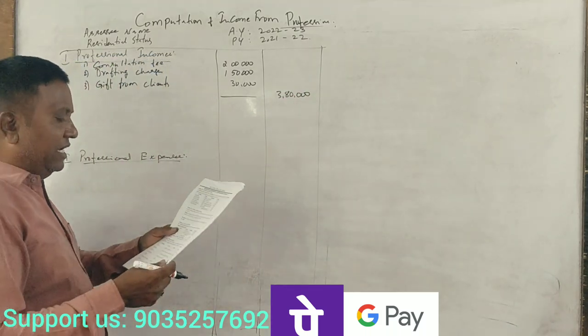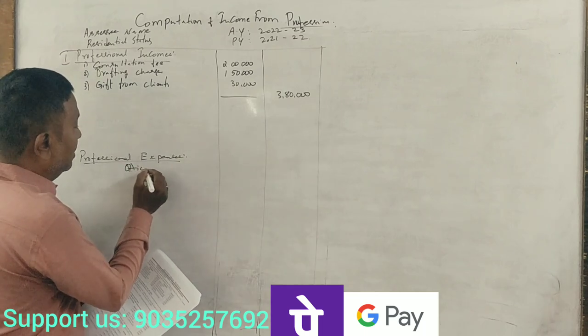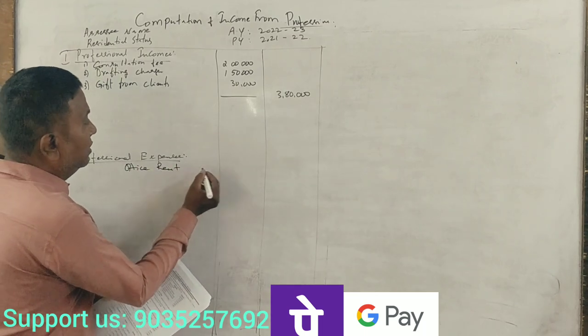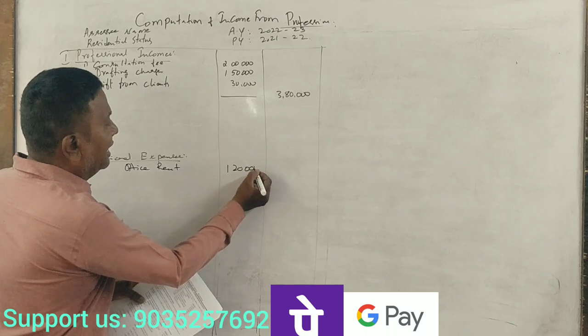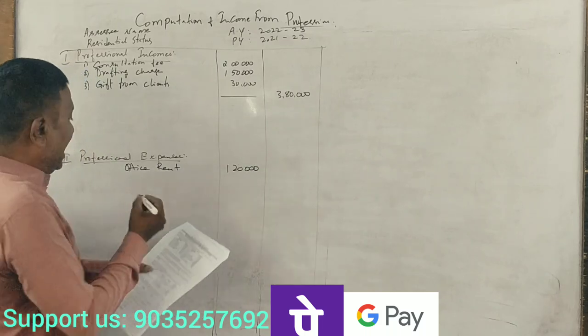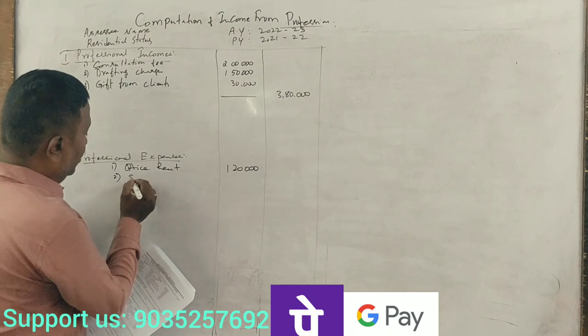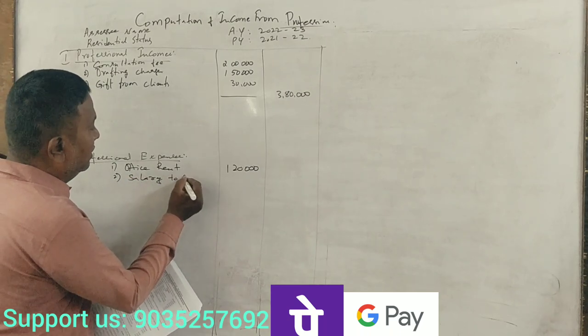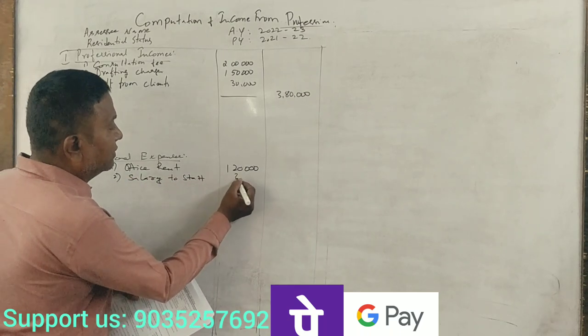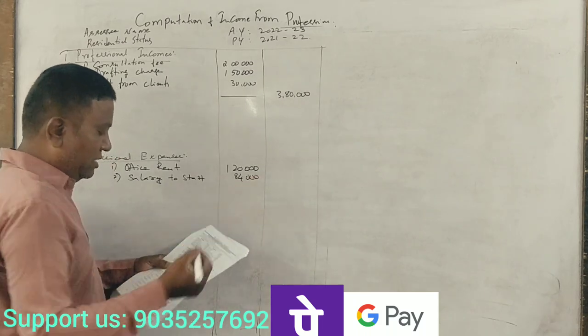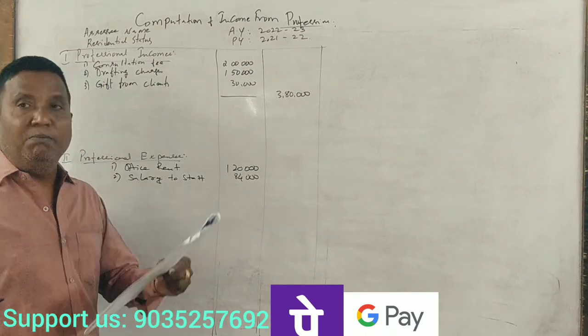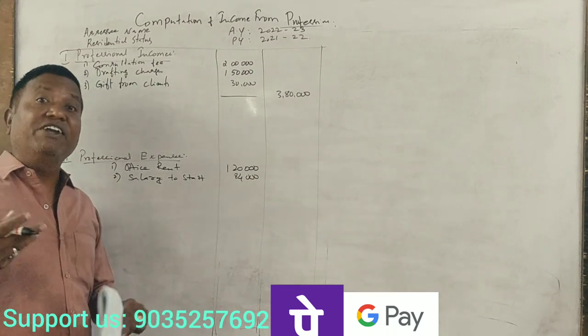Now for expenses and payments. Office rent is $120,000. Salary to staff is $84,000. Car expenses are $25,000 for personal and $75,000 for professional use.